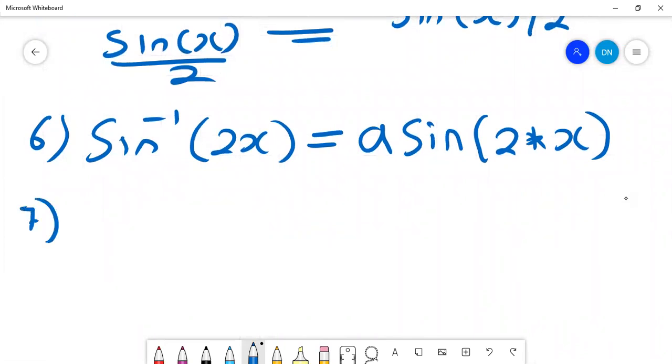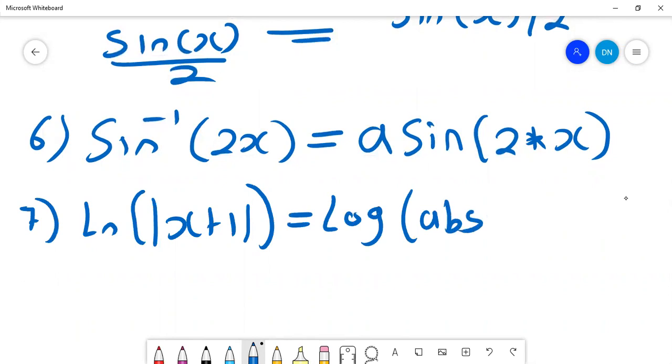If, for example, you have ln, the natural logarithm, and you want to put the ln of x plus 1, then what you have is log absolute value of x plus 1. Where does the absolute value come in? This is the absolute value.